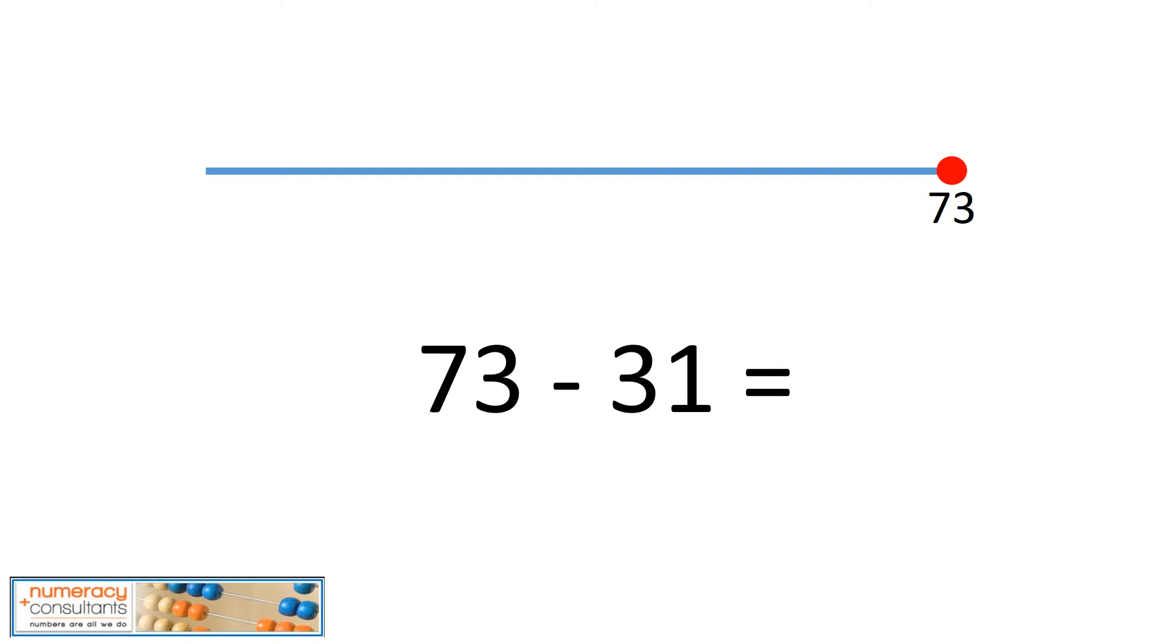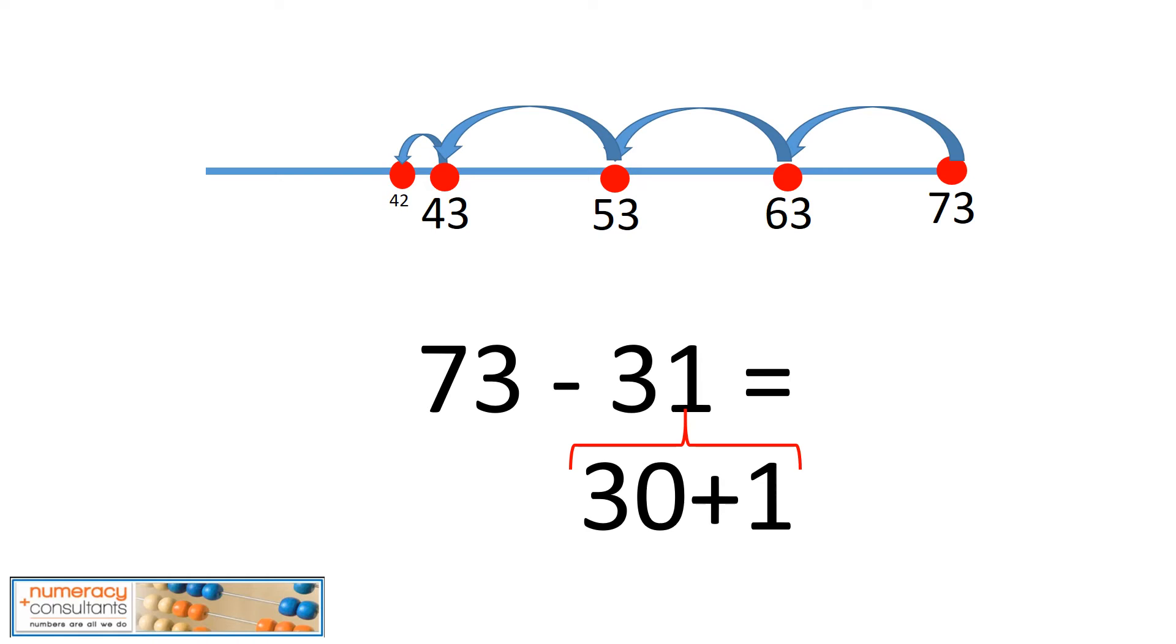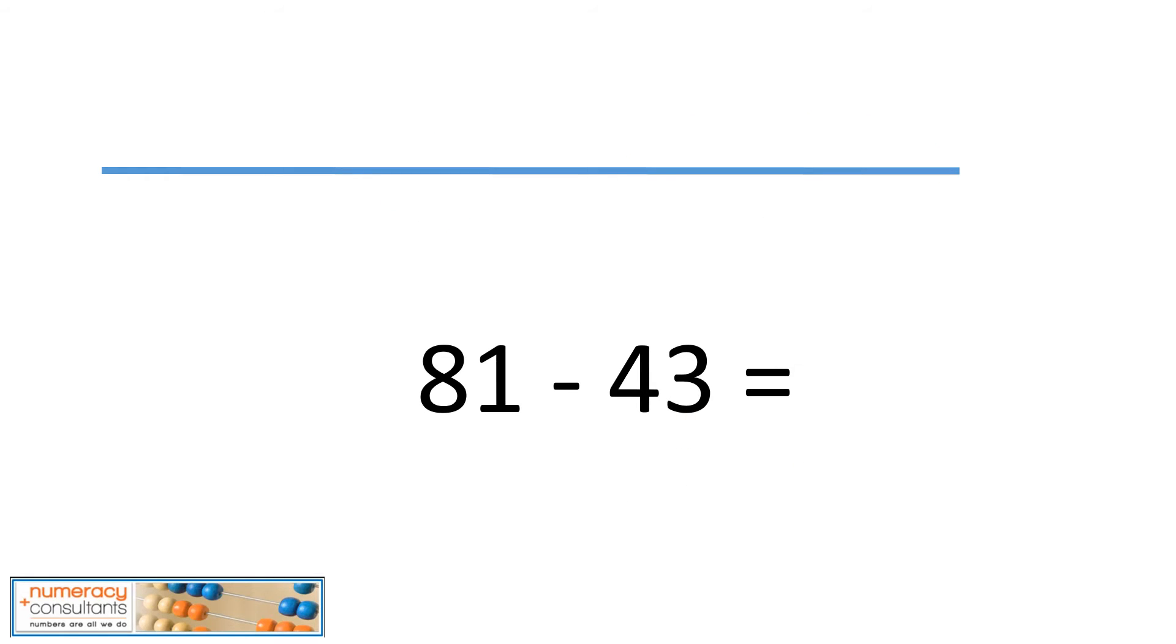Now we need to take a look at 31, and we know that 31 can be broken down into 30 plus 1. Well, how many jumps of 10 are there in 30? We know that there are 3. Let's go ahead and do our 3 jumps of 10. We have 73, 63, 53, 43. Now we've done our 3 jumps of 10 backwards, or going down the number line. Now we have to take a look at the 1, and we just have one to count back. So go 44, 43, 42. So our answer is 42.